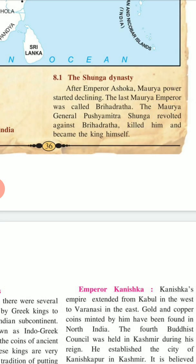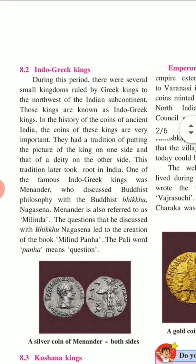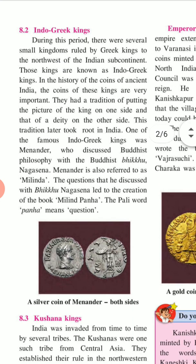The Shunga Dynasty: After Emperor Ashoka, the Maurya powers started declining. The last Maurya emperor was called Brihadratha. The Maurya General Pushyamitra Shunga revolted against Brihadratha, killed him, and became king himself.